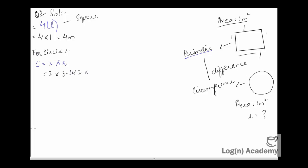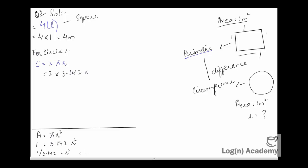ریڈیس نکالنے کے لیے ہم ایریا کا فارمولا استعمال کریں گے: Area = πR²۔ ایریا 1 میٹر سکوائر کے برابر ہے، π کی ویلیو 3.142 ہے۔ یہاں سے R² = 1 ÷ 3.142 = 0.318۔ اسکوائر روٹ لینے کے بعد R = 0.564 میٹر آیا۔ یہی ہے ریڈیس — اس ریڈیس کو آپ سرکمفیرنس فارمولے میں پلیس کر دیجیے۔